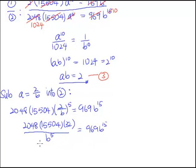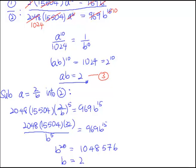Now we cross-multiply and divide by 969. We find that b to the power of 20 equals 1,048,576. Taking the 20th root of both sides gives b equals 2. You can verify this with a calculator. Now that b equals 2, looking at equation 3: a equals 2 over b equals 2 over 2, which equals 1. So a is equal to 1 and b is equal to 2.